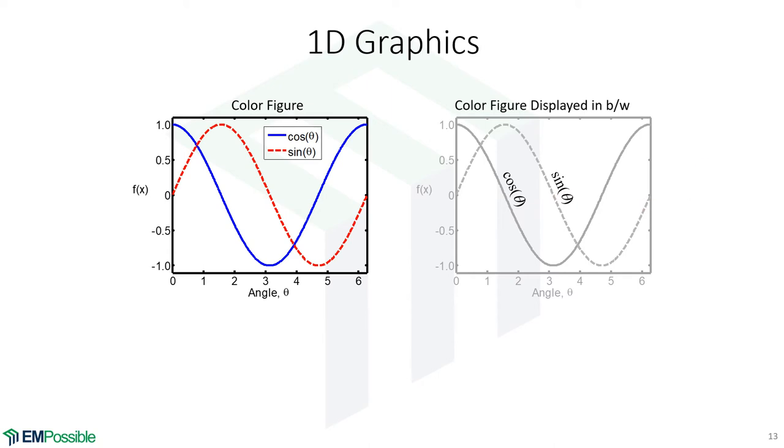So, now we have our fonts big enough, consistent number of significant digits. The axes are labeled. The lines are distinguished. Color in black and white. We know which one's sine. We know which one's cosine. Finally, do we have a good plot? Is this something we'd be proud to paste into our homework or in a publication or a presentation? The answer is still no. There's still some things wrong with this.